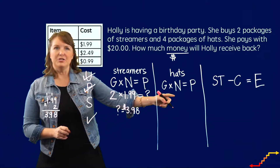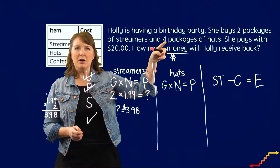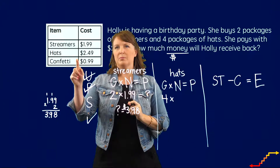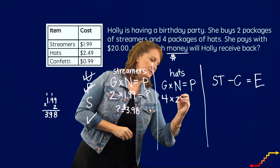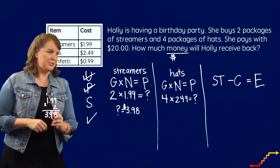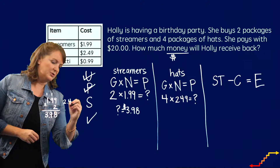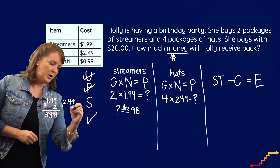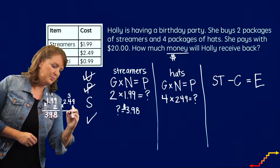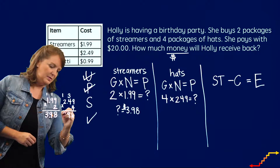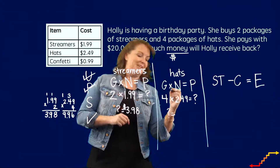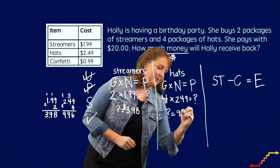Now we need to figure out how much Holly spent on the hats. She bought four packages of hats — so there are four groups — and each group costs $2.49. I'll move over to my workspace and do $2.49 times four. Nine times four is 36, so I need to do some regrouping. She spent $9.96 on the hats.